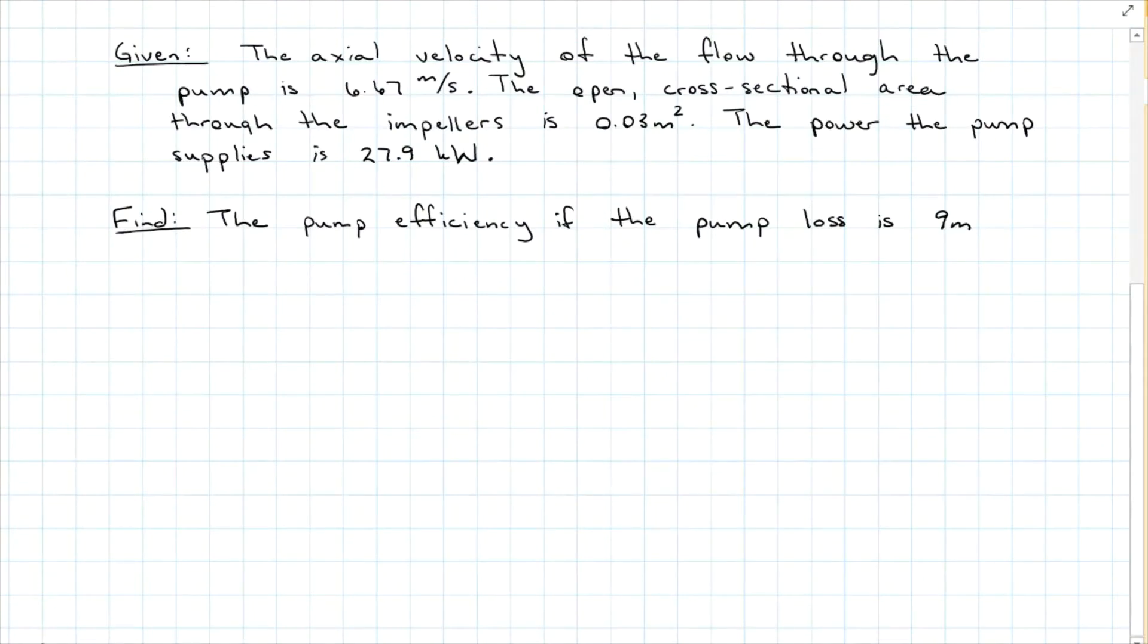For example, we're given a pump with an axial velocity through the pump of 6.67 meters per second. The cross-sectional area through the pump is 0.03 meters squared, and the power that the pump supplies to the water is 27.9 kilowatts. Find the pump efficiency if the pump loss is 9 meters.